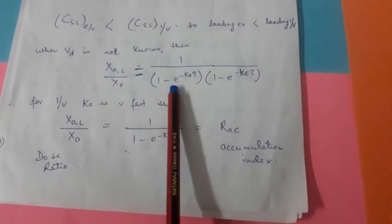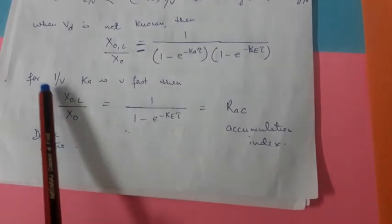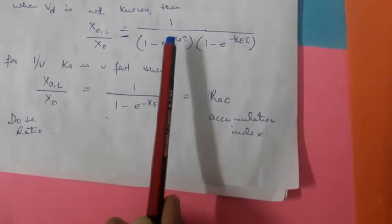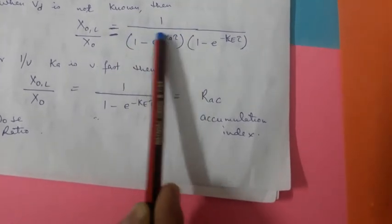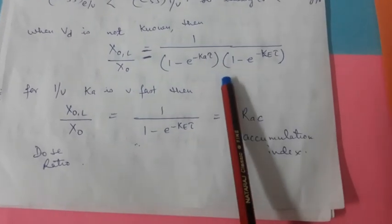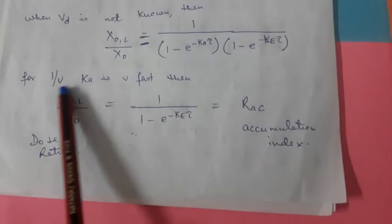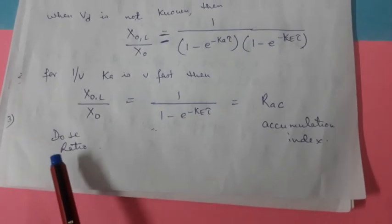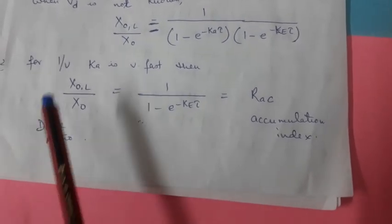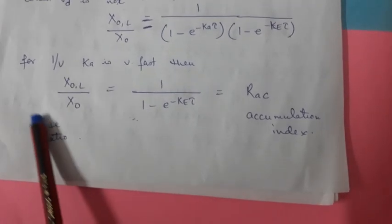Ek formula aata hai loading dose upon maintenance dose ka. Woh kya hai: 1 upon (1 - e^(-kτ)). Ab yadi hum drug ko IV lein to absorption term nahi aayegi, formula hoga: loading dose upon maintenance dose is equal to 1 upon (1 - e^(-kτ)). Isko kehte hain accumulation index, jisko show karte hain Rac se. Yeh wala part kehlaata hai dose ratio. Bohut baar yeh question ek number mein aata hai: what is dose ratio - dose ratio is nothing but the ratio of loading dose upon maintenance dose.